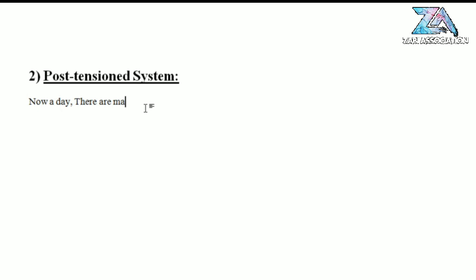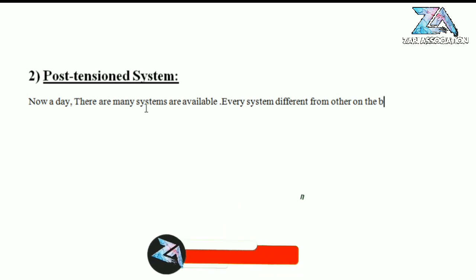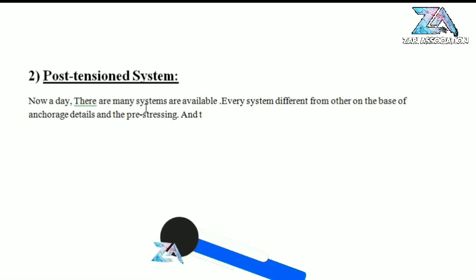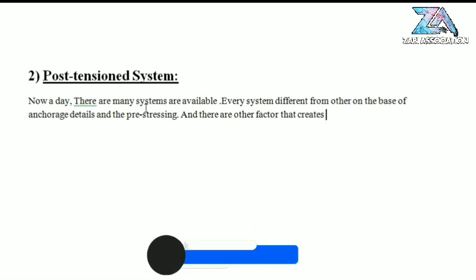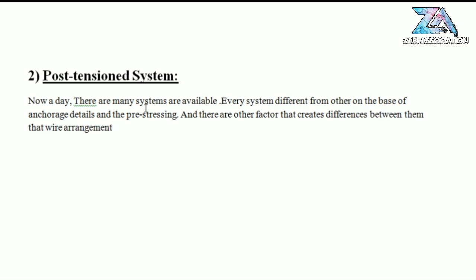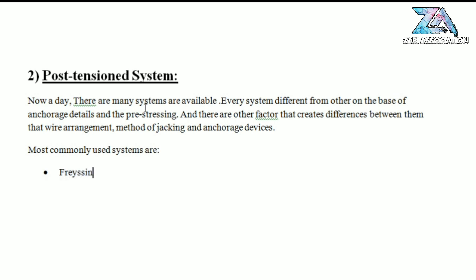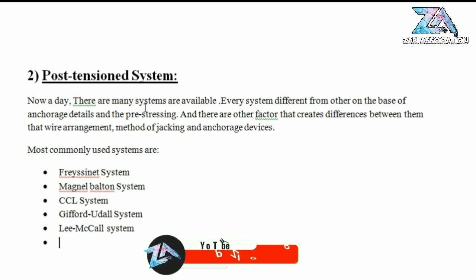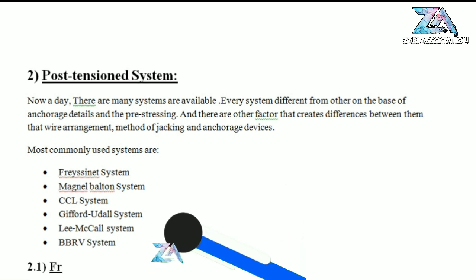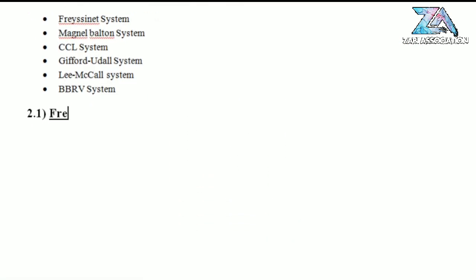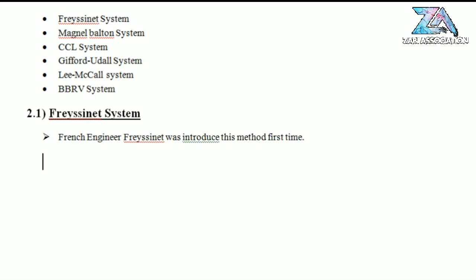There are different systems in post-tensioning, like the Freyssinet system, Magnel-Blaton system, CCL system, and others. We will discuss all systems one by one. Every system is different from others based on anchorage details, wire arrangements, method of checking, and anchorage devices. The most commonly used systems are: Freyssinet, Magnel-Blaton, CCL, Gifford-Udall, Lee-McCall, and BBR systems.